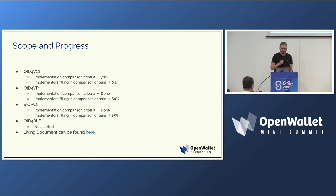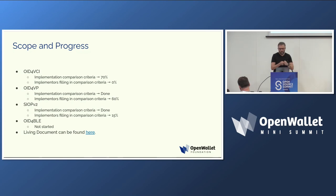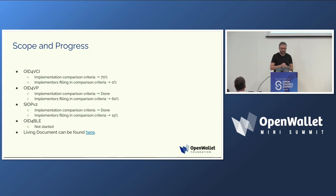There is another protocol called SIOPv2, which is a protocol for doing pseudonymous authentication with the wallet. You can set up a new connection for a certain relying party using a key pair managed by the wallet for subsequent logins. This is also part of the family and is being used in the EIDAS context. We have already broken down all the criteria and are now waiting for implementers to fill in. For OpenID for BLE, we haven't started yet, but it is ongoing work.